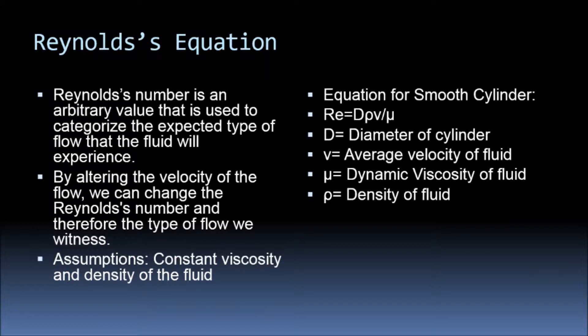It is assumed that the fluid, water, in this experiment has a constant viscosity and density. On the right, the equation for Reynolds number is given: diameter times density times velocity all over dynamic viscosity.